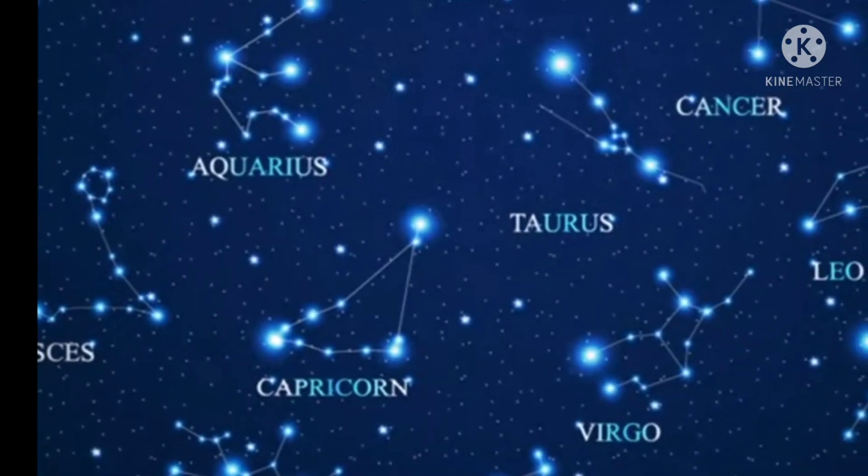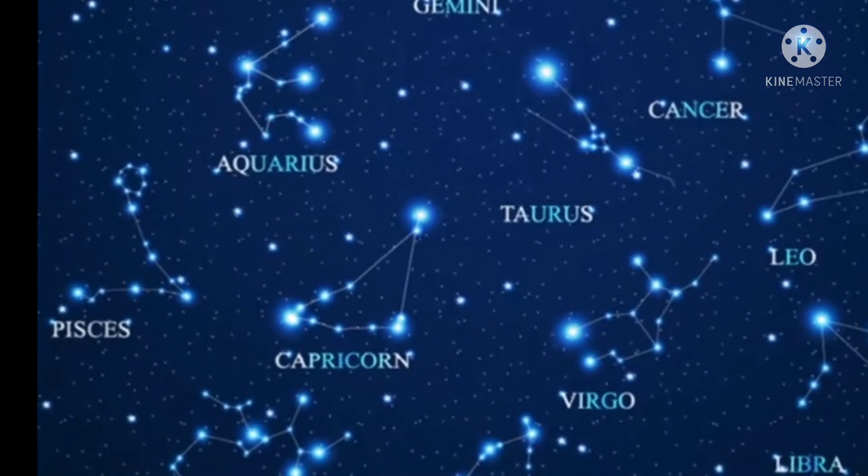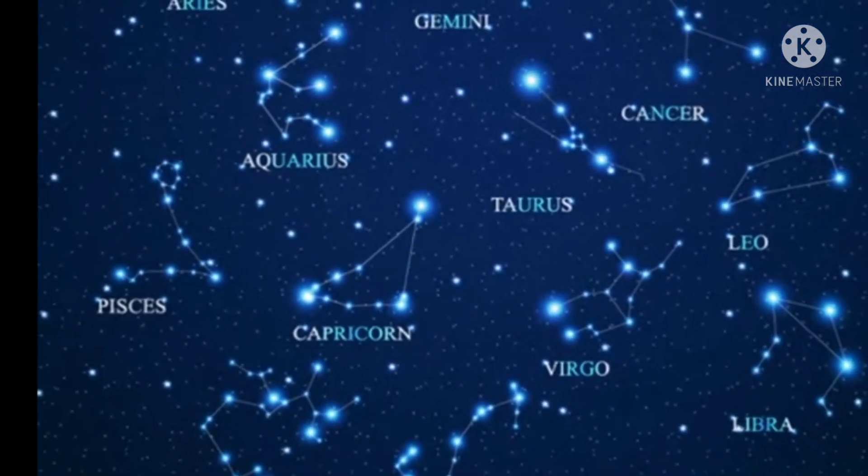Aries, Leo, Cancer, Libra, Scorpio are some of the constellations we commonly know.